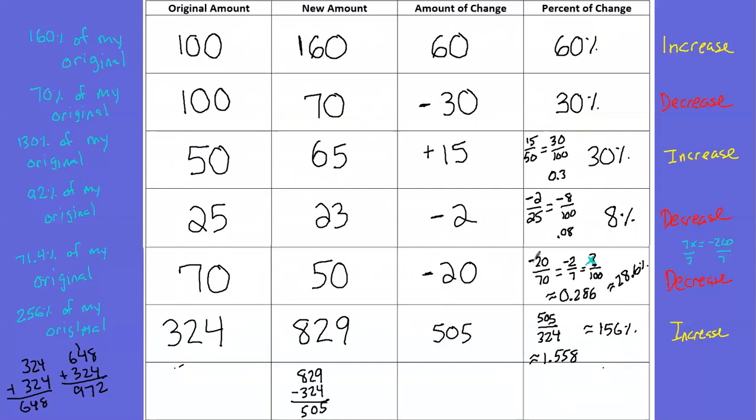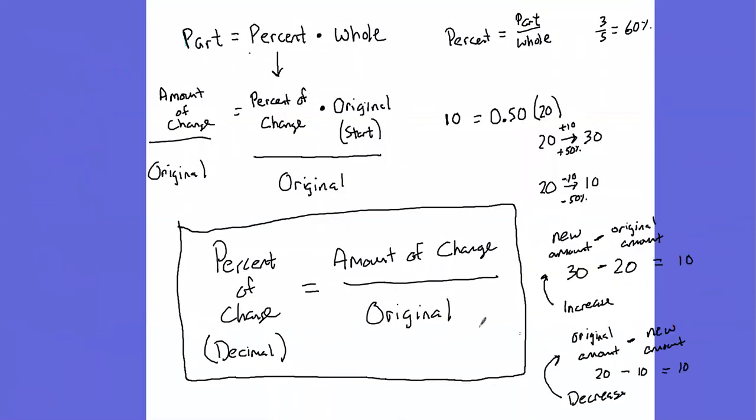Once again, if you include the negative in there, you'll get a negative answer. Just realize that means a percentage of decrease. You could leave it out and just use the word decrease. My amount of change was 2, divided by what I originally had, which was 25. That was an 8% decrease. So hopefully that helps a little more with making sense of this percentage of increase, percentage of decrease content.